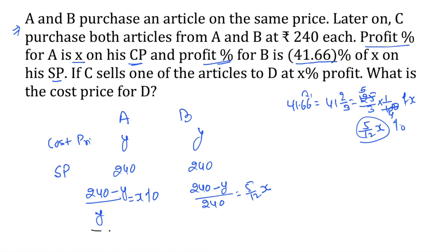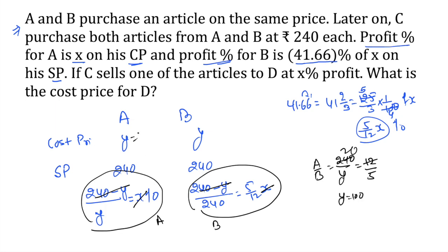We have equation 1 and equation 2. Let's divide equation A and B. When we divide equation A and B, 240 cancels out. Since A is in the numerator, this is in the numerator. We have x to x cancel out. This one is the denominator, so we can say this one is 12 by 5. So 12 by 5, y is nothing but 100. So we got our cost price is 100 by the basic equation.